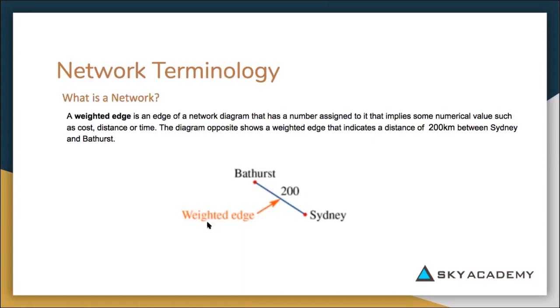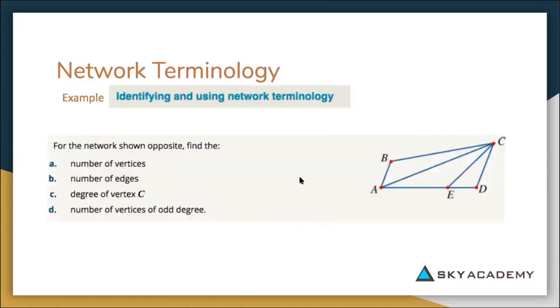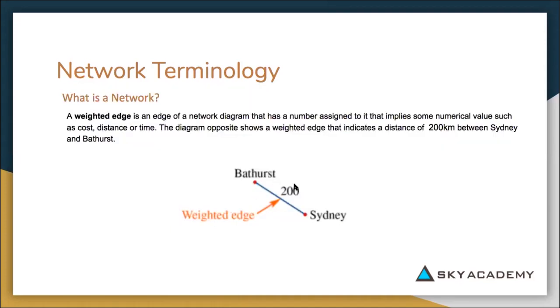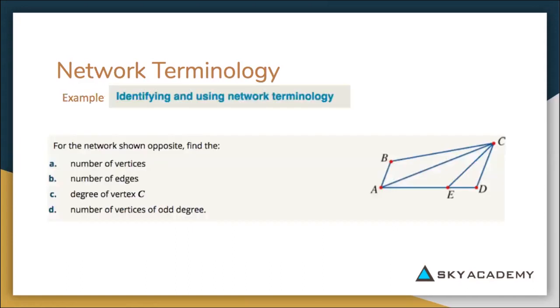So this value could be cost, it could be distance, it could be time. In the diagram below, we have two places, Bathurst and Sydney, and this diagram is indicating that there is a value of 200 between Bathurst and Sydney. So it could be 200 meters, 200 kilometers—here it's saying 200 kilometers—but it just means that it has a value, a numerical value associated to that edge.